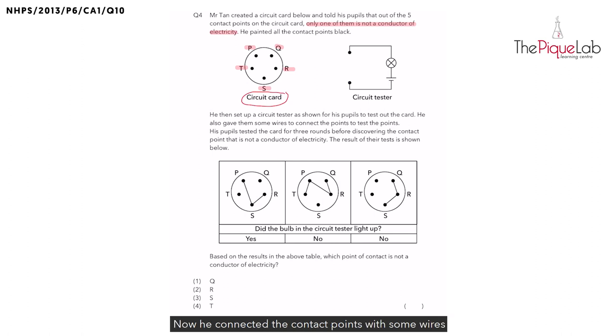Now he connected the contact points with some wires in three different ways. I'm going to label them as setup 1, setup 2 and setup 3. And he tested the contact points using the circuit tester and the bulb lit up for the first setup.